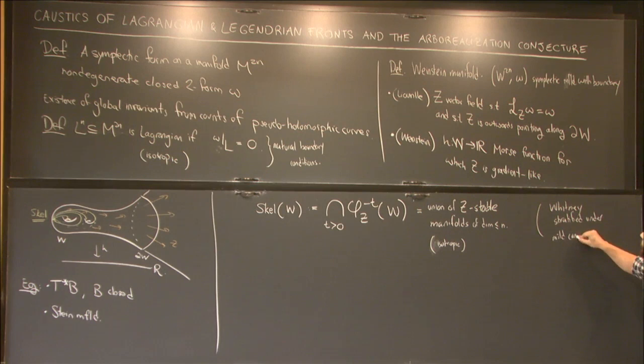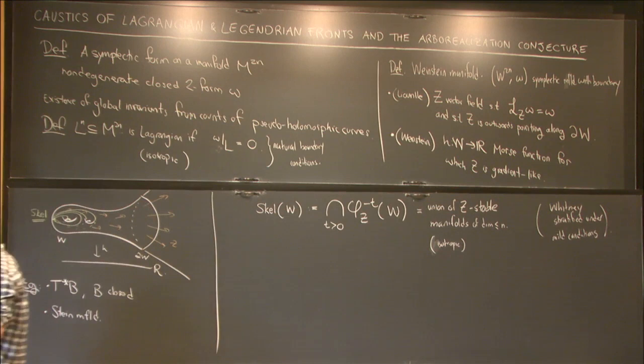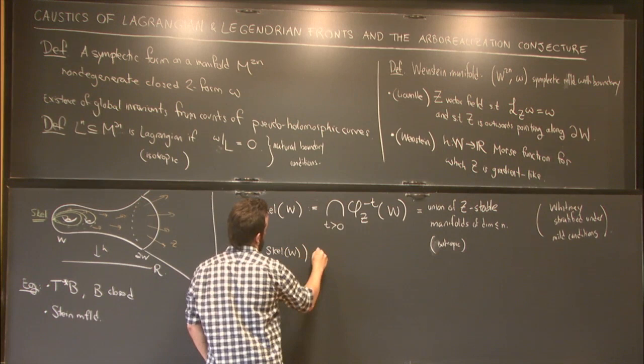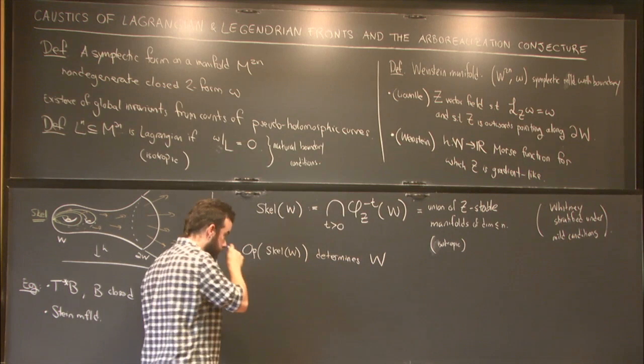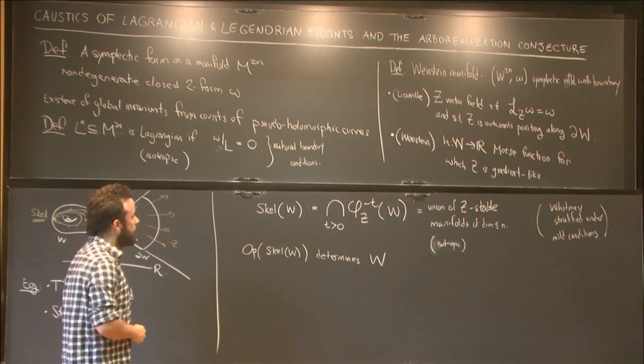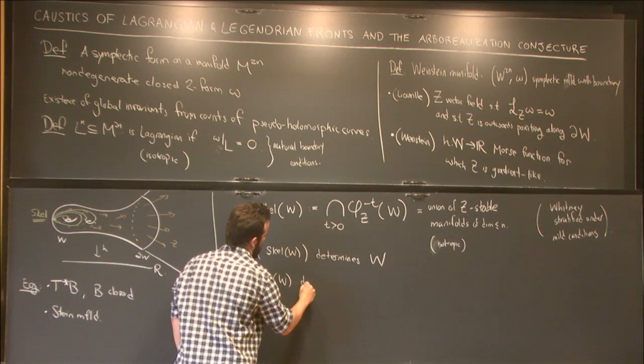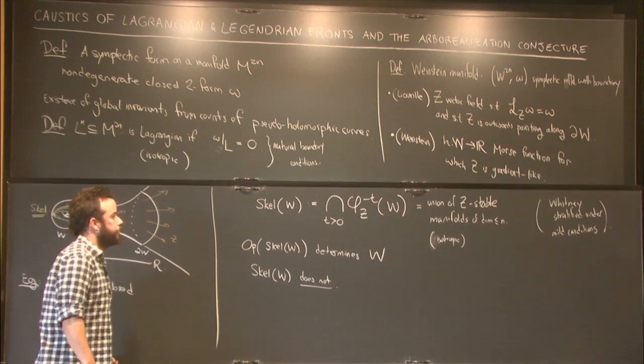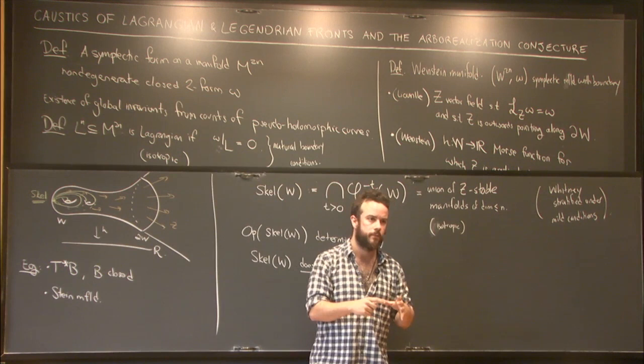And I think that a hope for a long time has been to try to understand Weinstein manifolds via their skeletons. So an open neighborhood of the skeleton determines W. For the purposes of the invariants that we care about, it determines it. However, the skeleton of W does not. What does Whitney stratified mean? There's some nice cone structure near every stratum. We can talk about it afterwards as well.